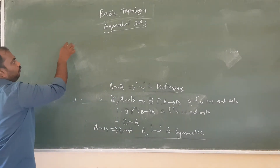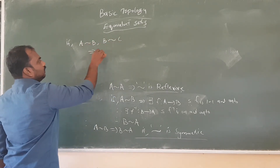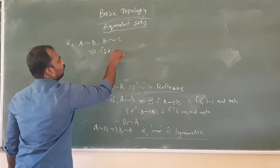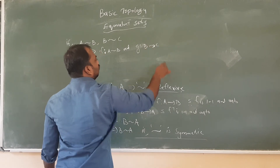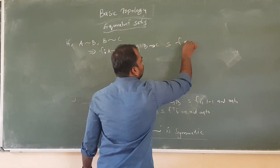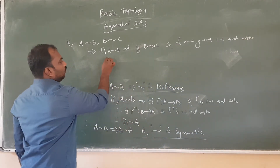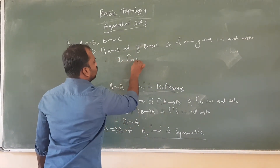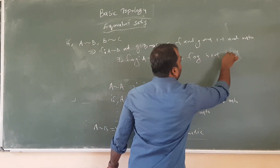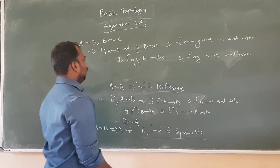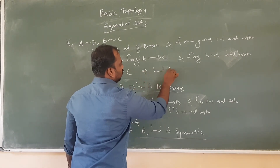Similarly, if A is equivalent to B and B is equivalent to C, then there exist functions F from A to B and G from B to C, such that F and G are one-one and onto. Therefore the composition G∘F is also one-one and onto, so A is equivalent to C. Therefore we can say that the relation is transitive.